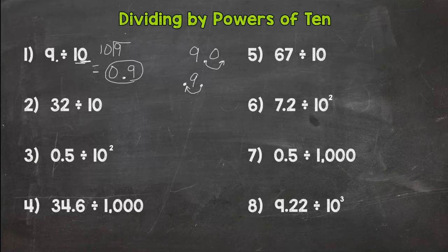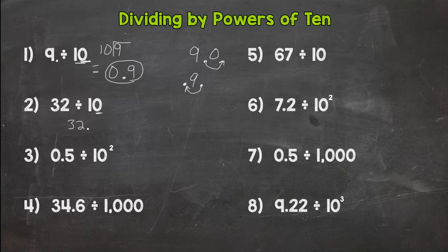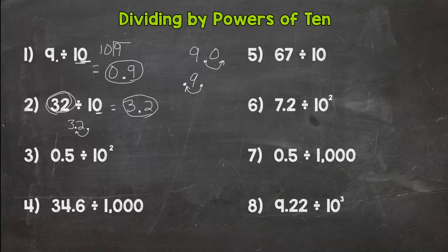Let's check out number 2: 32 divided by 10. The decimal for 32, or all whole numbers, comes after the number. One zero in 10, which means we move the decimal one time in order to push the 3 and the 2 to the correct place value. So let's move it one time to the left, and it's in between the 3 and the 2. So our answer would be 3 and 2 tenths. And think — we have 32, which is around 30. What's 30 divided by 10? Well, 3. Is our answer close to 3? Yes. So it makes sense.